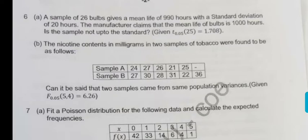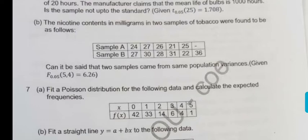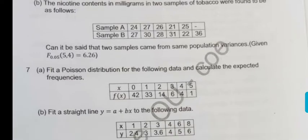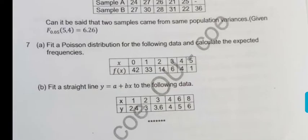Then nicotine contents of same question. It is there in the video. This is for F-test. Correct? Table value is given. Then question number 7. Fitting a Poisson distribution. Similar question I explained. Then last one is very simple question. Fitting a straight line of the form Y is equal to A plus BX. Correct?